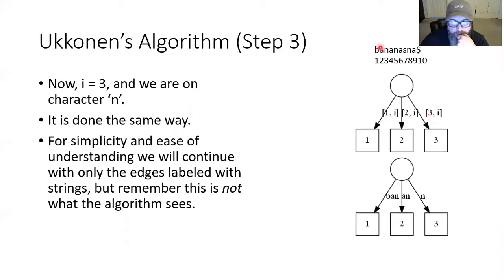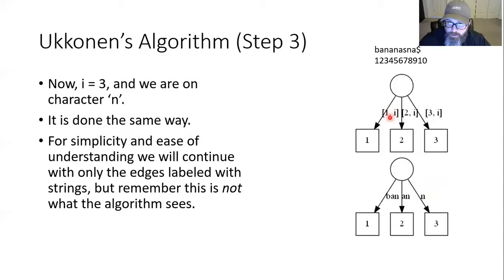At step three, i is 3 and the character is N. An N gets appended to every existing edge automatically — now the B-edge goes from 1 to 3 (B-A-N), and the A-edge goes from 2 to 3 (A-N). Do any edges begin with N? No. So we insert an edge at position 3 to 3, which is N.